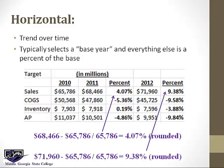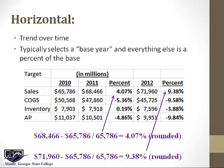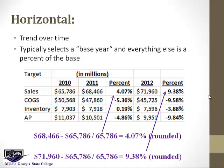What we did is we took 2011, subtracted 2010, and took that difference over the base year 2010. Then for 2012 we did the same thing — we took 2012, subtracted 2010, and divided by the base year 2010. We did that for each of the four items.